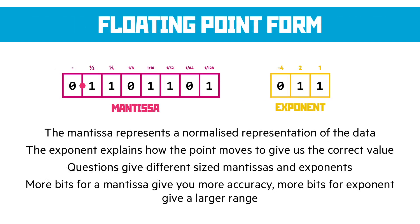Floating point form involves a mantissa and an exponent of a set size. It's a normalized representation of data, which means it very much looks like 0.something or 1.something, and the exponent explains how the point moves to give us the correct value, either left or right. We need to convert from floating point form to standard decimal and back. The question will identify the size of the mantissa and exponent and how both are signed — sign and magnitude or two's complement. The key thing is: more bits in the mantissa gives more accuracy; more bits in the exponent gives a larger range.